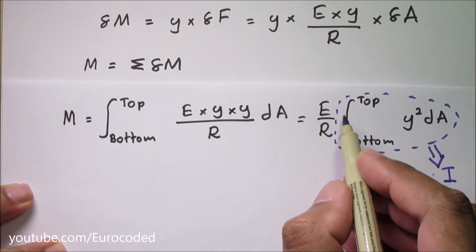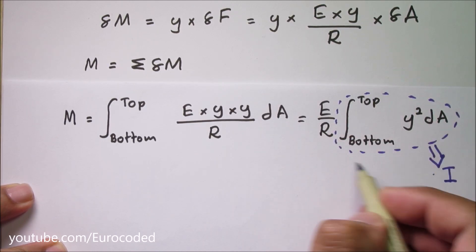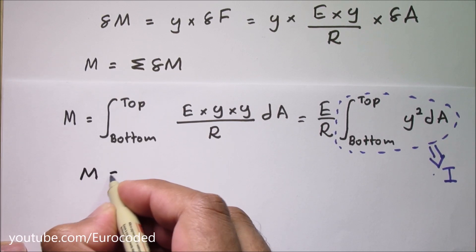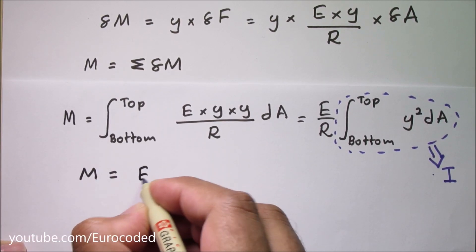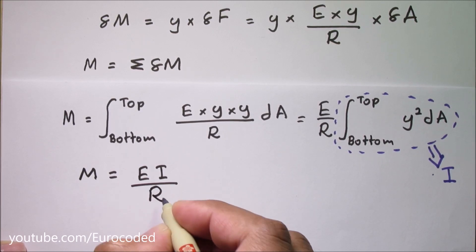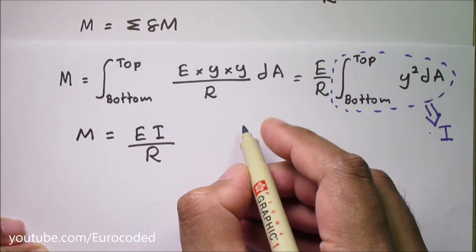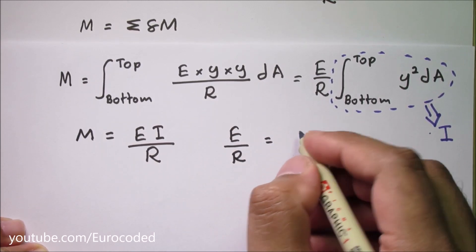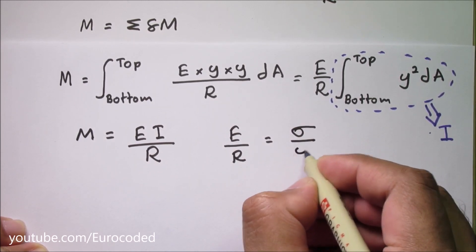So now we can replace this expression with I and we can rewrite M is equal to EI over r. And we know that E over r is equal to sigma over y.